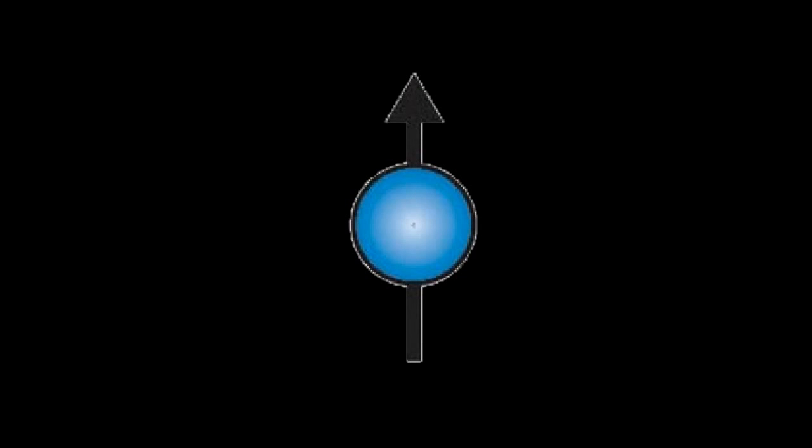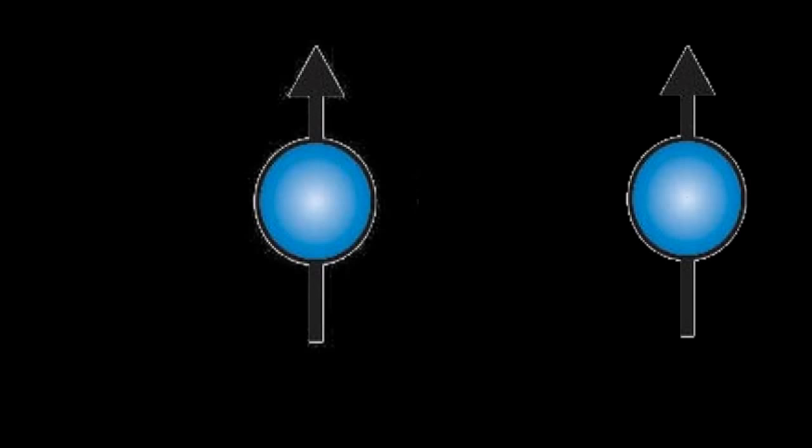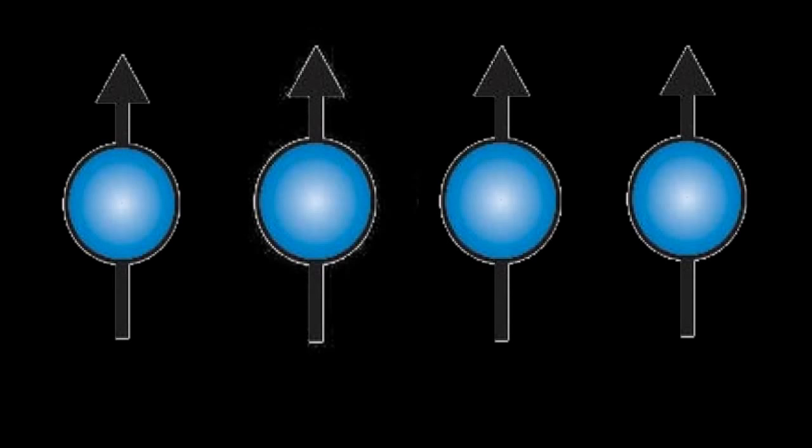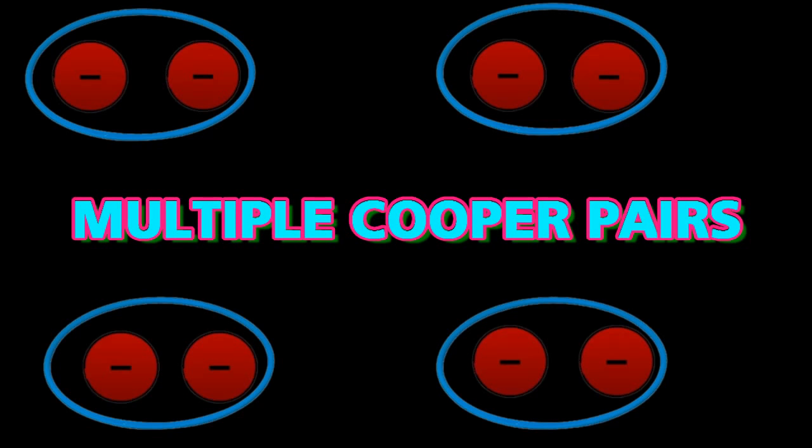Electrons being fermions have half-integer spin, which combine to form Cooper pairs that have full integer spin — hence they are called bosons. Therefore, multiple Cooper pairs can exist in the same quantum state. Hence electrons stay paired and resist the kicks from oscillating atoms, which are small at very low temperatures. And thus the flow of electrons faces zero resistance.